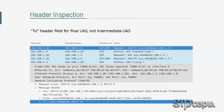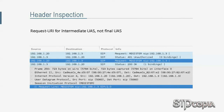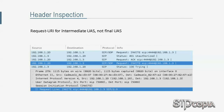One thing this intermediate UAS should not do is send a 416 Unsupported URI Scheme response if it doesn't support the URI scheme, since the intermediate UAS is not the intended destination. The same principle applies to the user portion of the URI in the To header field. Unlike the To header field, the Request-URI in the request line is intended to target the next hop in the call path. If the URI scheme in the Request-URI is not known to the intermediate UAS, it could send back a 416 Unsupported URI Scheme response.